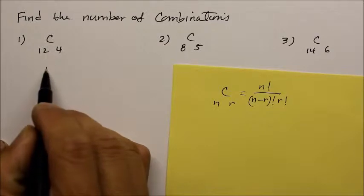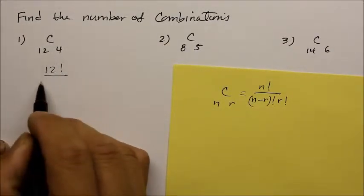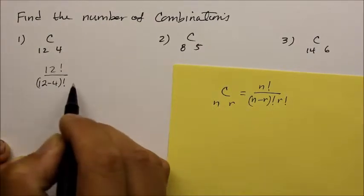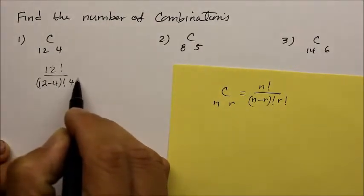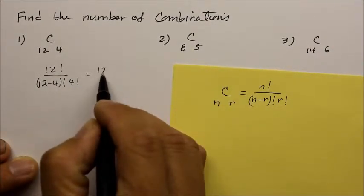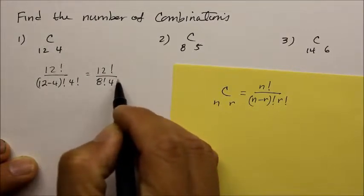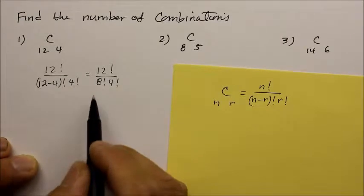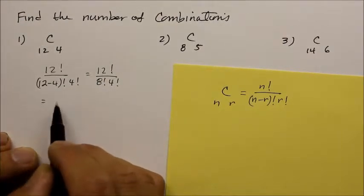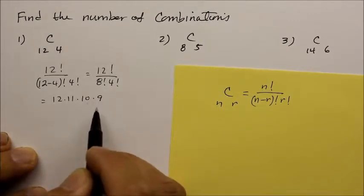You simply go, alright, well that's 12 factorial over 12 minus 4. Let's write it out. 12 minus 4, which is going to be 8 factorial, times the r, the 4 factorial. So you get 12 factorial over the 8 factorial times the 4 factorial. So how do we do it?